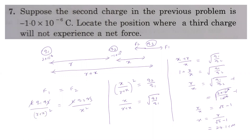The third charge is 24.1 cm from the smaller charge. From the larger charge, the distance is r + x = 10 + 24.1 = 34.1 centimeters. So the third charge must be placed 34.1 cm from the larger charge, on the line joining the charges, on the side of the smaller charge.